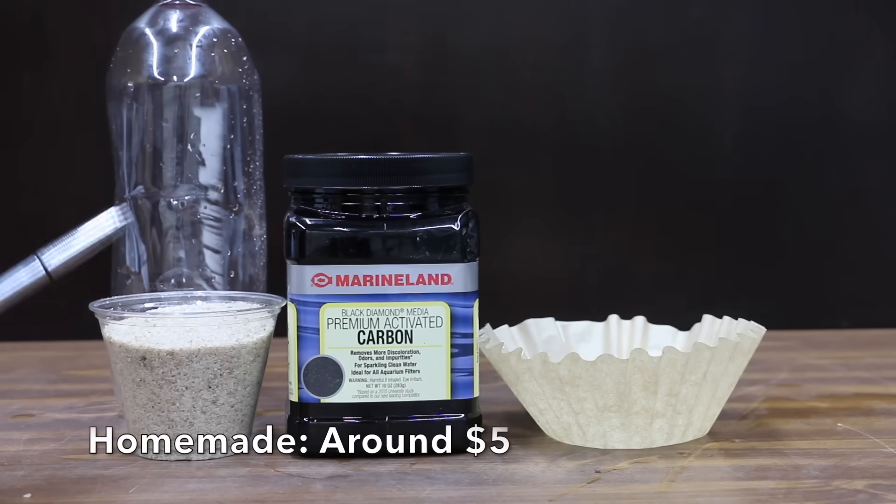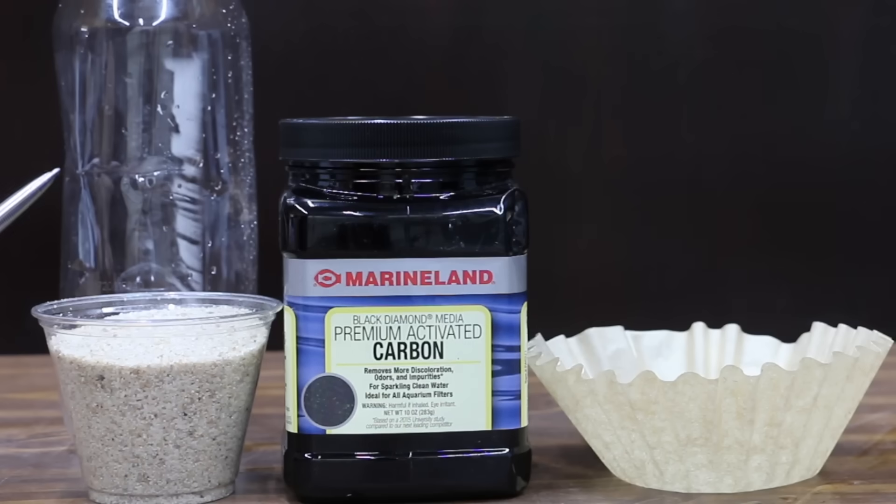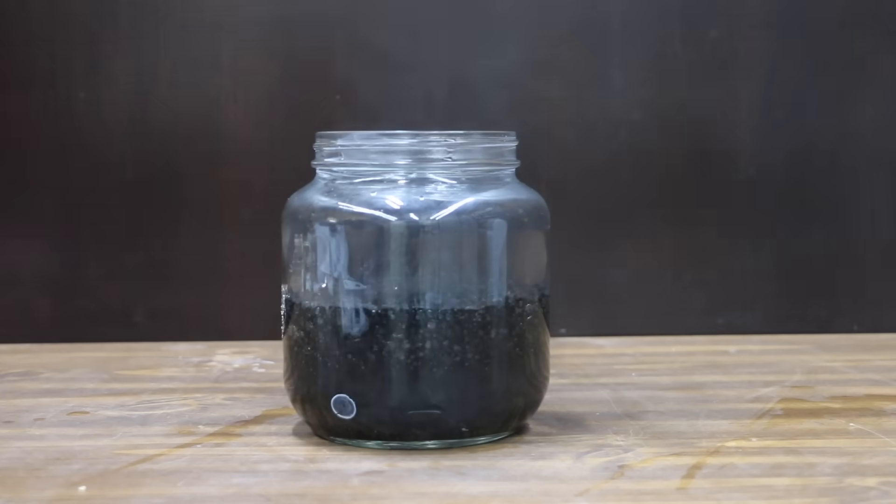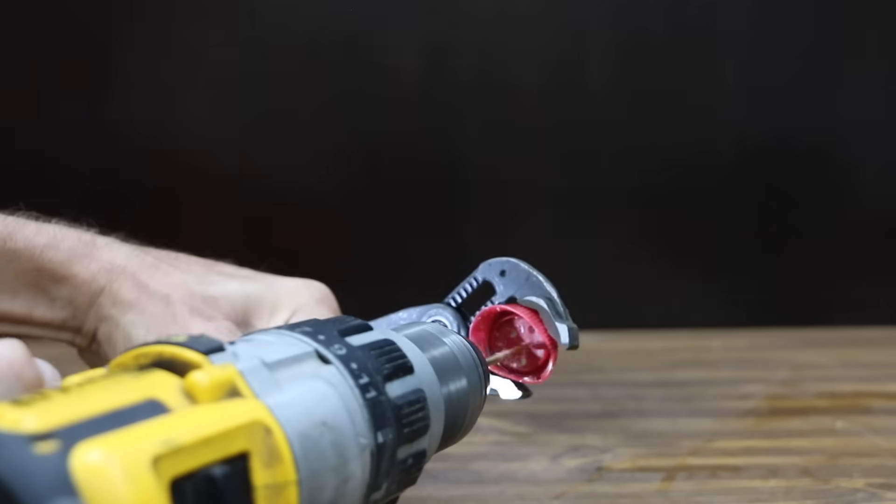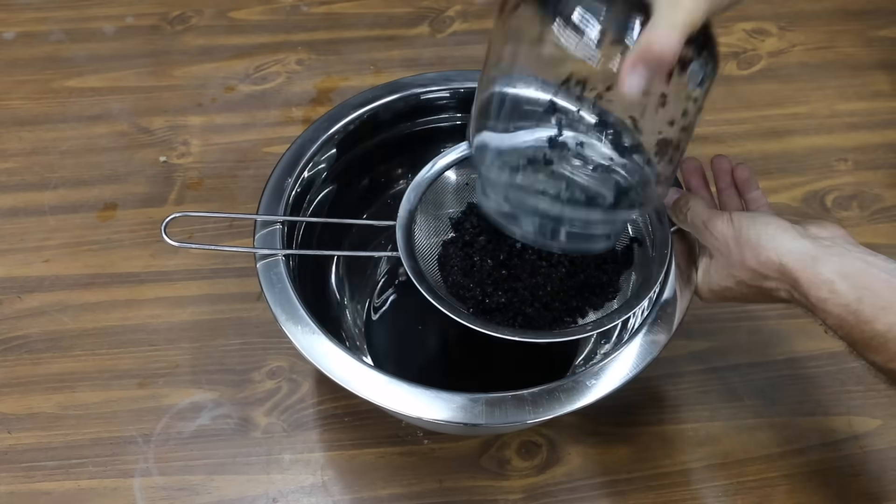So why spend money on a water filter system when you can just make your own for around $5 in supplies? You'll need a plastic bottle, a little bit of sand, and some carbon. Let's first go ahead and soak the carbon in some water. While the water is soaking, let's go ahead and drill some holes in the cap on the bottle. Let's remove the bottom of the plastic bottle and then rinse off the carbon.